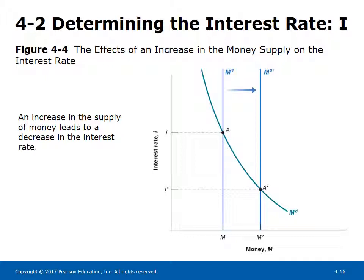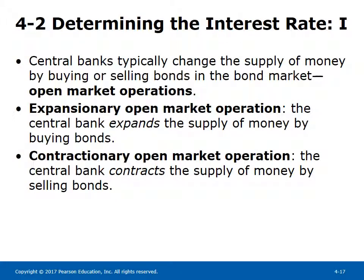Conclusion: for a given money supply, an increase in nominal income leads to an increase in the interest rate. An increase in the supply of money by the central bank leads to a decrease in the interest rate. Central banks typically change the supply of money by buying or selling bonds in the bond market — called open market operations. Expansionary open market operations mean the central bank buys bonds to expand money supply; contractionary operations mean selling bonds to contract money supply.